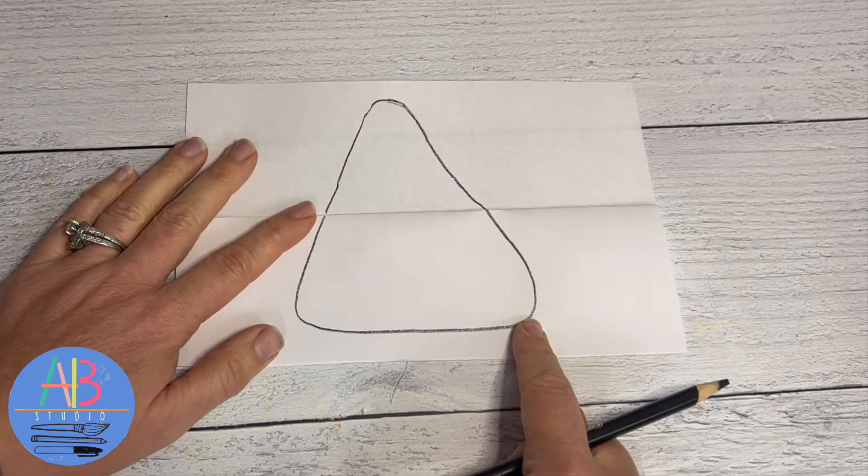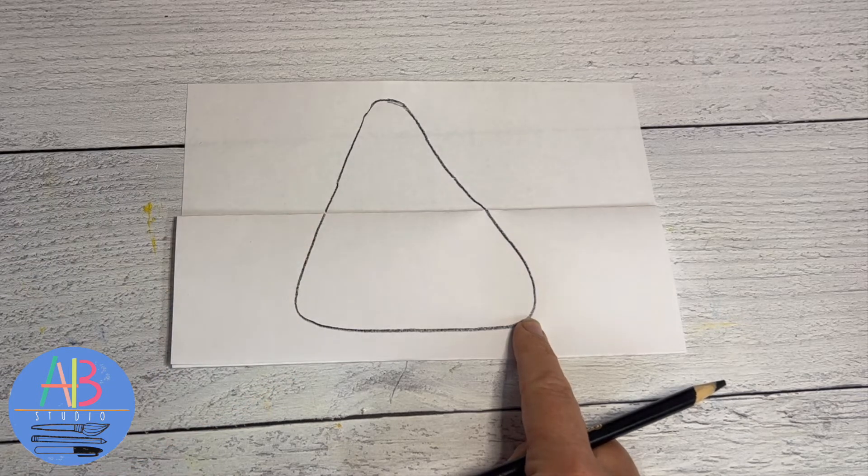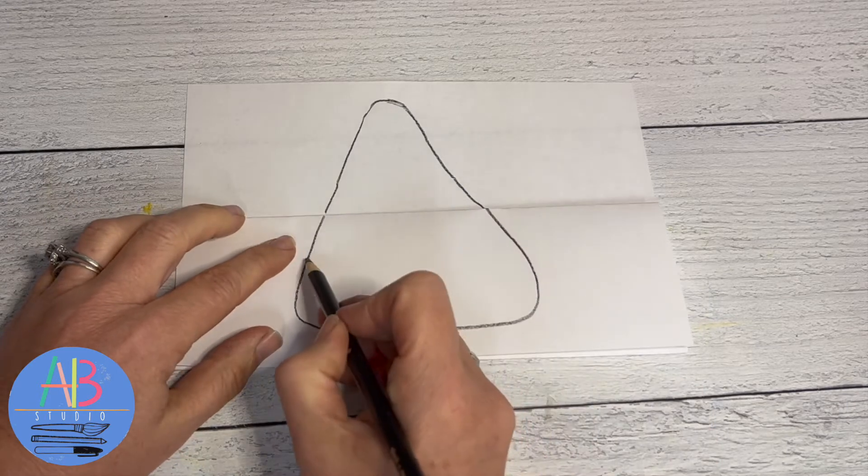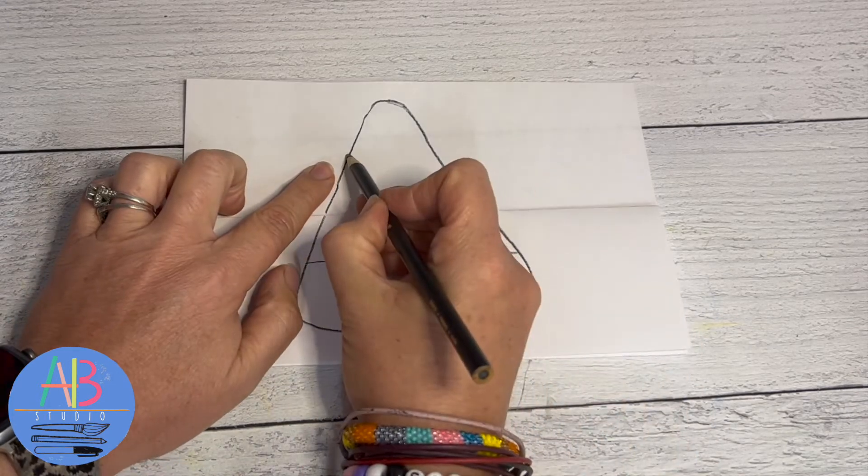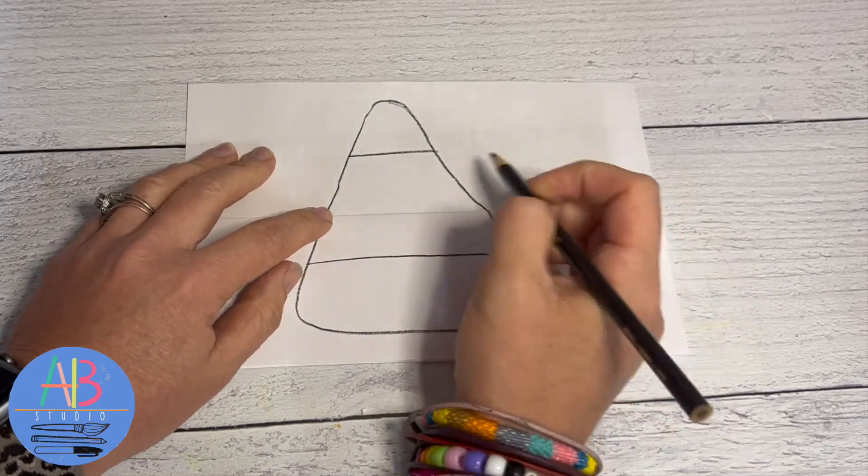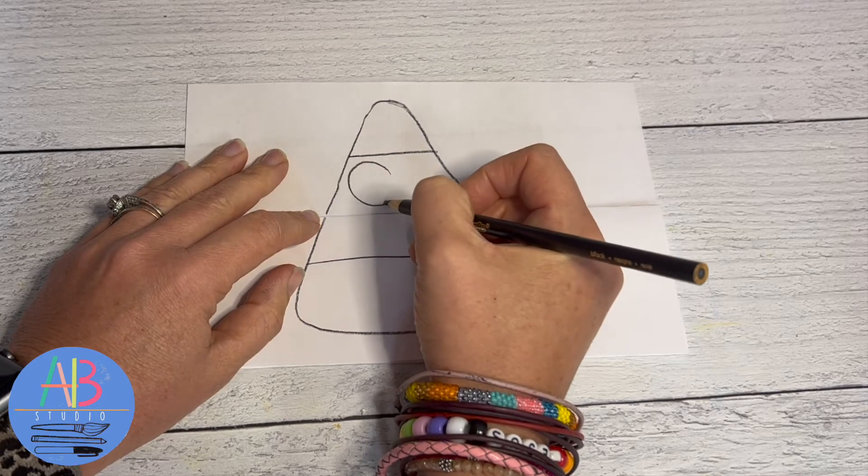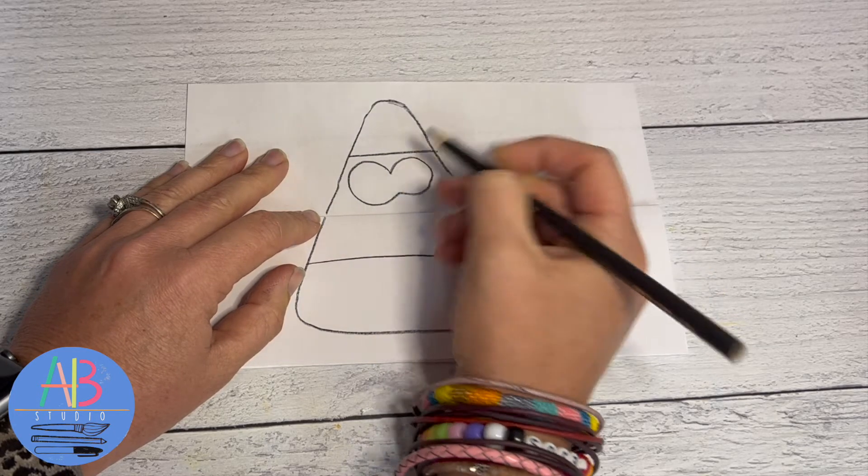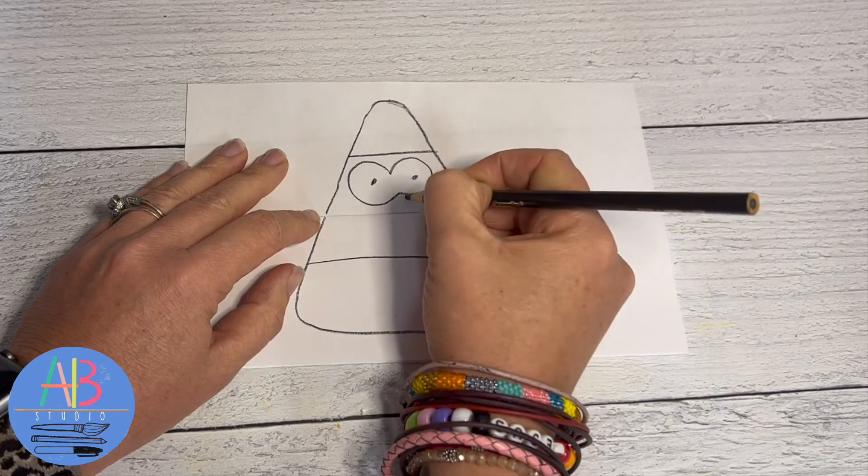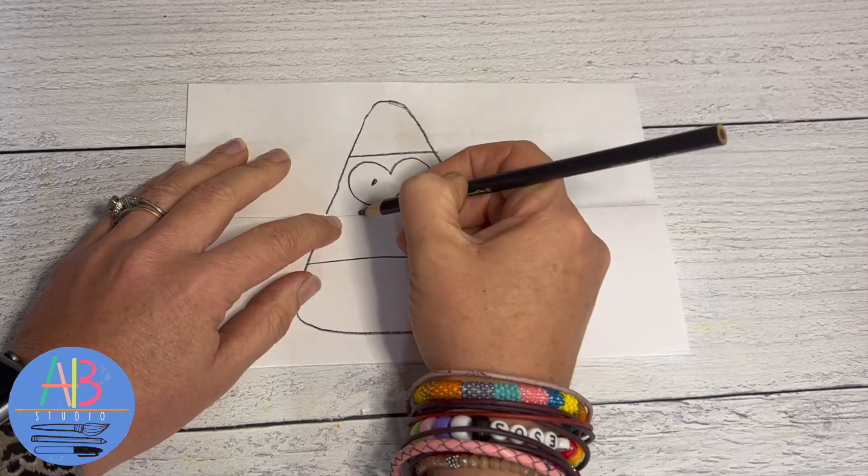These corners of our triangle should be curved, they are not pointy. A candy corn is three colors so we're gonna draw just two lines - one below the fold, one above the fold. Now our candy corn has eyes. These eyes are like two circles melted together. I'm gonna make a big one and a small one, then a dot, a little oval for the nose.